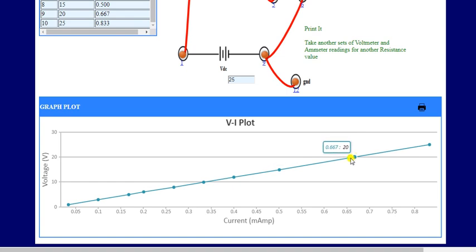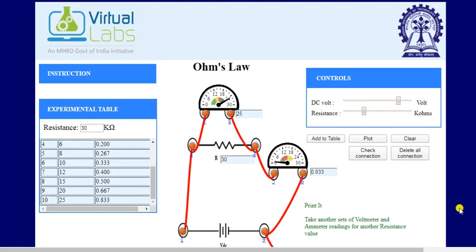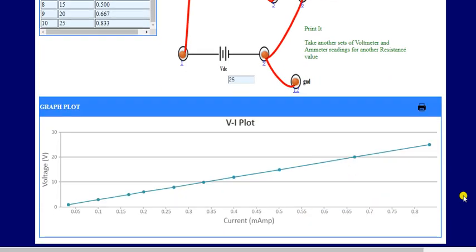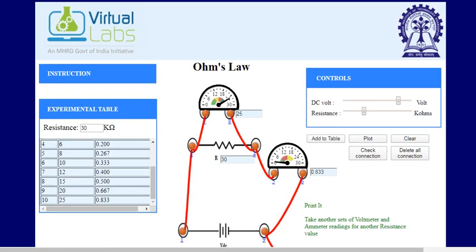This is the verification of Ohm's law. So for a resistive component, the current and voltage both are linear—these values have a linear relationship. Thank you.